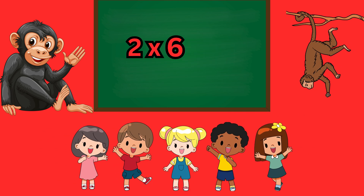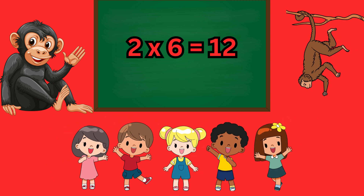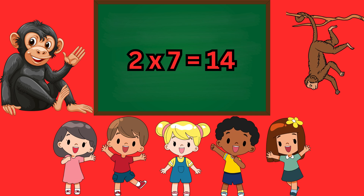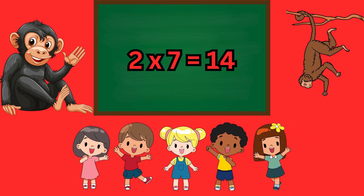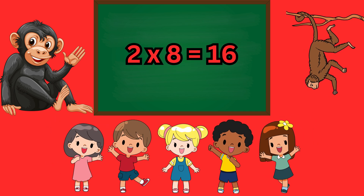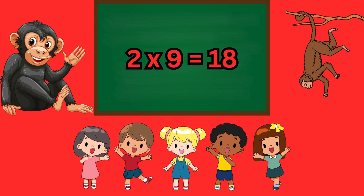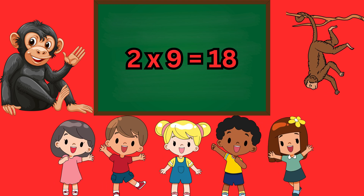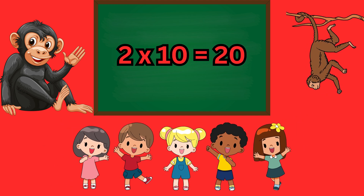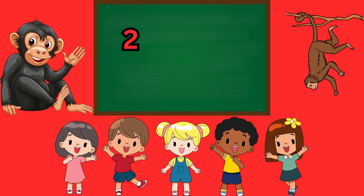2 six's a 12, 2 seven's a 14, 2 eight's a 16, 2 nine's a 18, two tens are twenty.